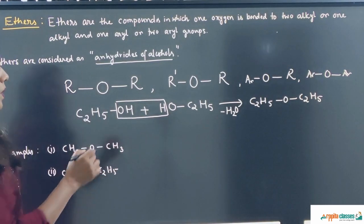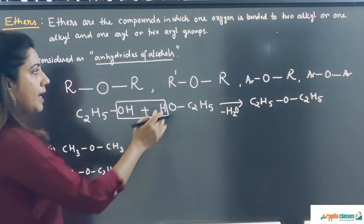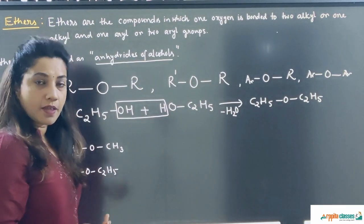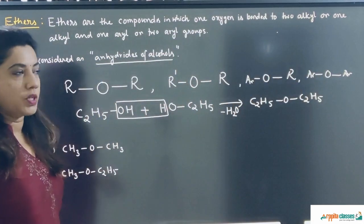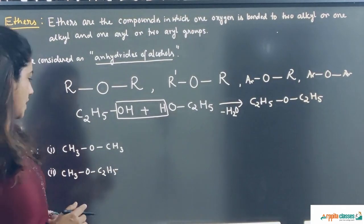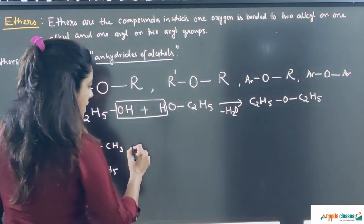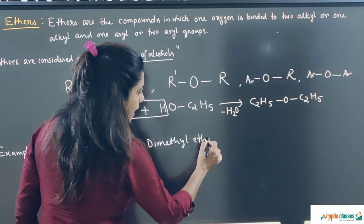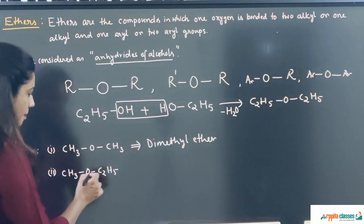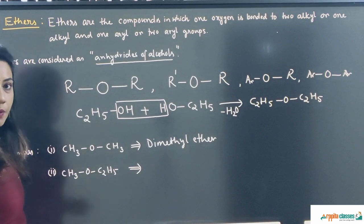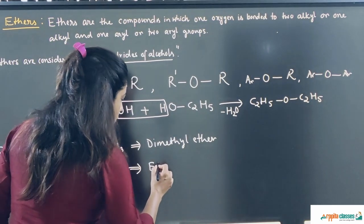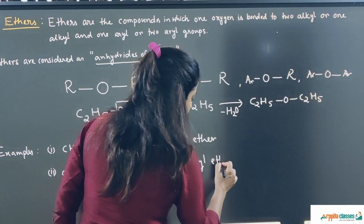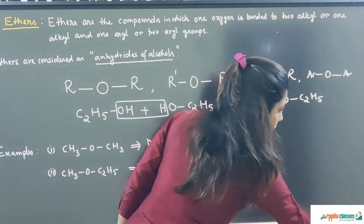Ethers are compounds where oxygen is bonded to either two alkyl groups or one alkyl and one aryl group. The alkyl groups can be the same or different. They are also called anhydrides of alcohols. For example, CH₃OCH₃ is called dimethyl ether — that is the common name. Another example where one side an ethyl group is attached and the other side a methyl group is attached is called ethyl methyl ether.